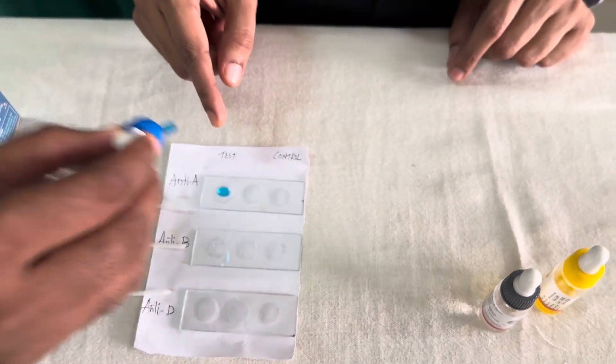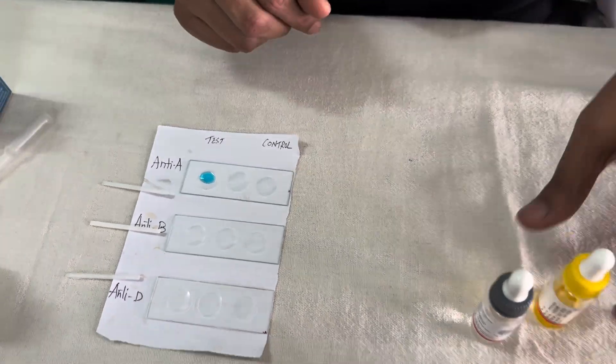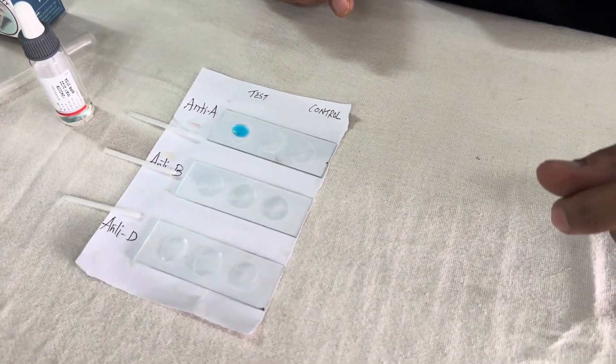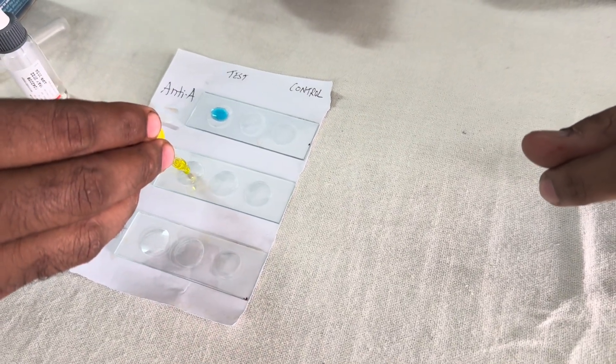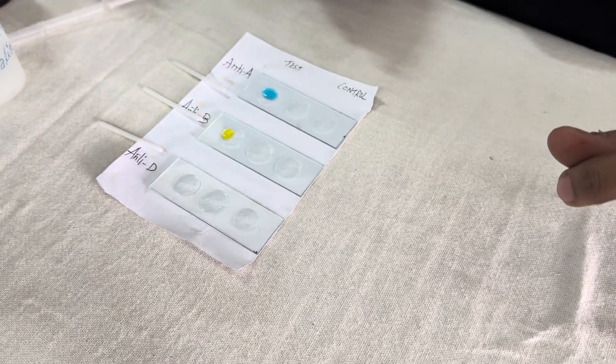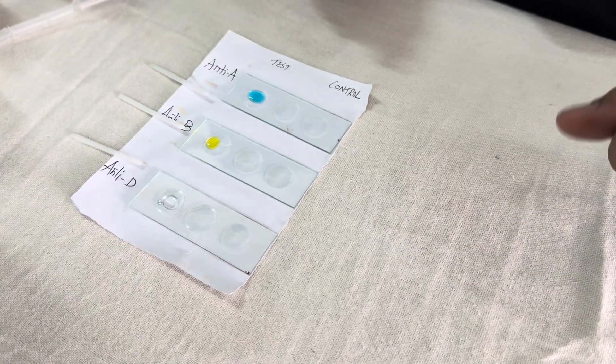On the anti-A, we will put around one or two drops of the anti-sera A. On the anti-B, one to two drops of anti-B. In the anti-D, one to two drops of anti-D anti-sera. This liquid contains antibodies against the RH antigen, that is the D antigen.